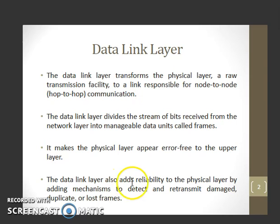The data link layer also adds reliability to the physical layer by adding mechanisms to detect and retransmit damaged, duplicate, or lost frames.